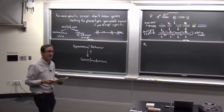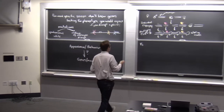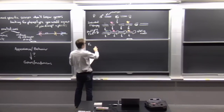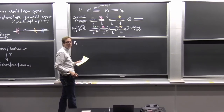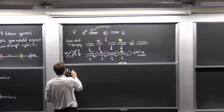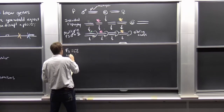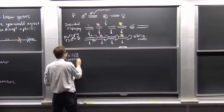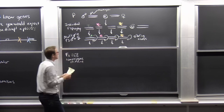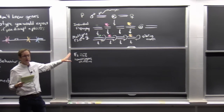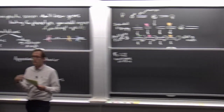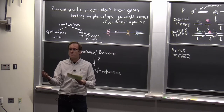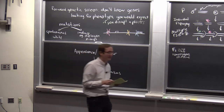You can screen this F3 progeny for each independent line and look for flies at some stage of development that are defective in patterning. It turns out all of the mutations they're interested in are lethal, so they have to look at the larval stages for ones that have a defect in patterning.